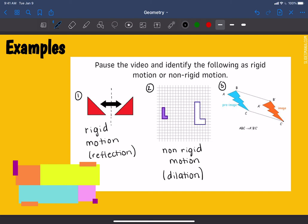And finally, the third one is called a rigid motion. And this one is a translation.